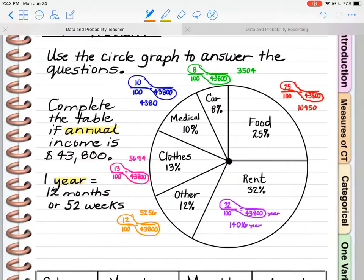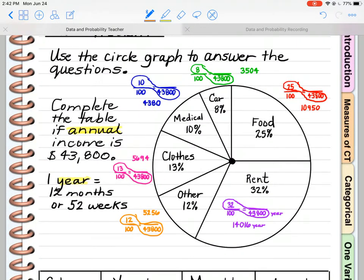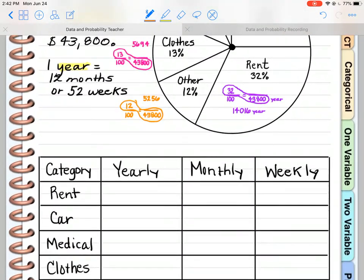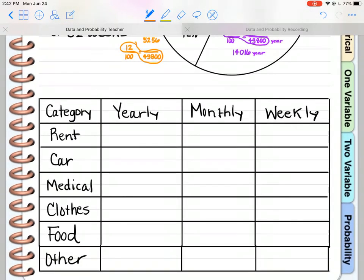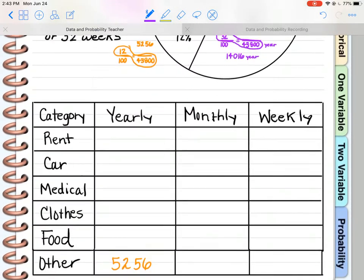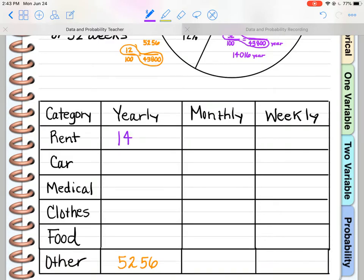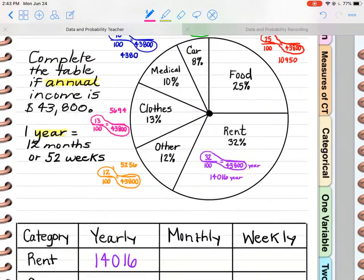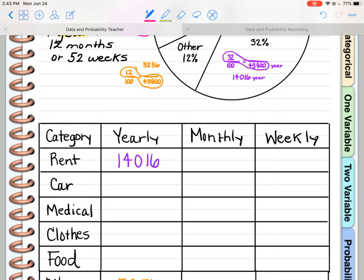Now that we've done the math, let's complete our chart. Other, I'm going to go ahead since I have the orange and fill this in. Other was $5,256 per year. Rent was $14,016. So all I'm doing is filling in my numbers into my chart.